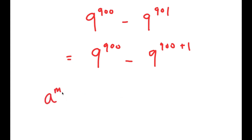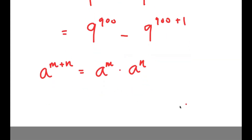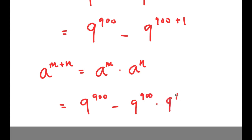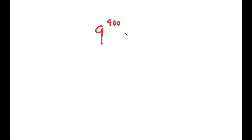Now I can use the exponential property: a to the power of m plus n is equal to a to the power of m times a to the power of n. So I get 9^900 minus 9^900 times 9^1.